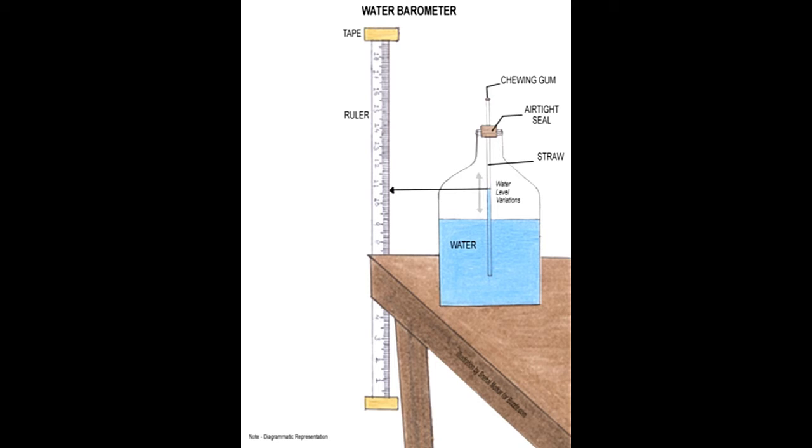But is it possible to make such equipment at home? Yes, it is. Following are some easy instructions to make a water barometer. You will need: glass jar, tape, ruler, a transparent straw, a pencil and a piece of paper, and chewing gum.